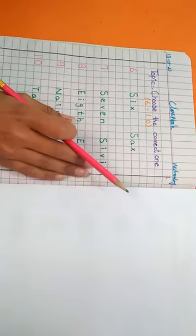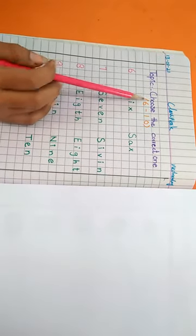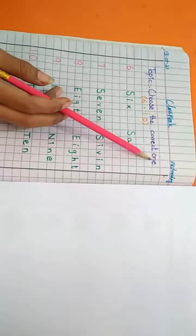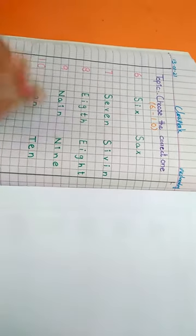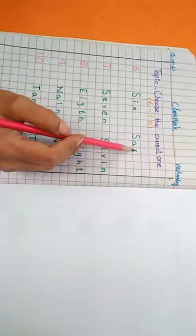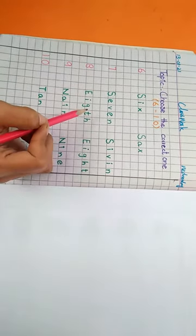This activity is also about counting. You can see here, choose the correct one. Every number has two options. So we circle or tick on the right ones.